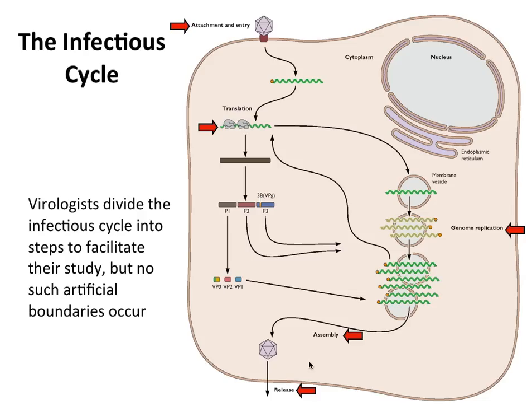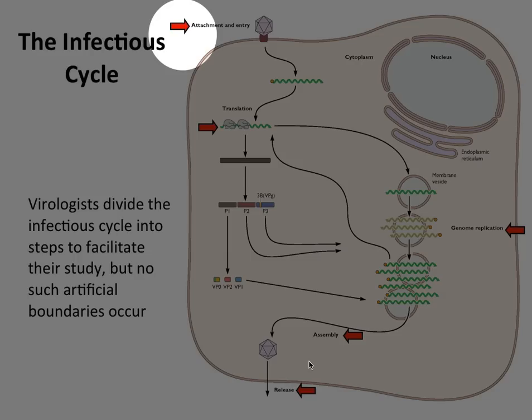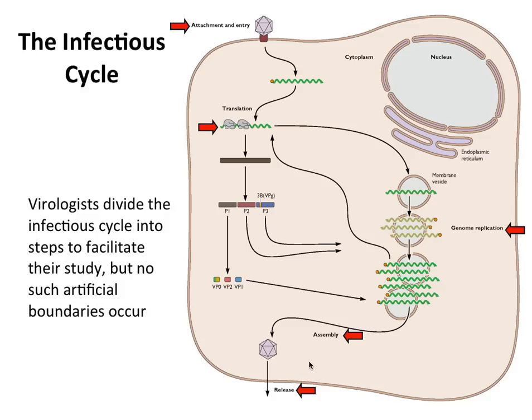We divide the cycle into steps only to make it easier to study, because in an infected cell everything happens in a continuum. These steps are illustrated here by red arrows: attachment and entry. The next step shown is translation. This happens next in a cell infected with poliovirus because the RNA released from the capsid is in fact the messenger RNA, so it can be directly translated. But other viruses have DNA genomes, and DNA cannot be translated — you have to first make messenger RNA. So you can see right away how the infectious cycle can differ just depending on the configuration of the nucleic acid in the virion.